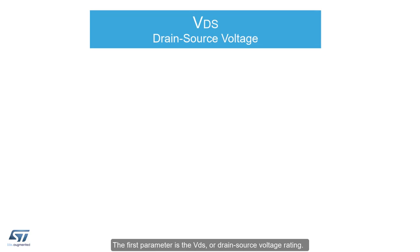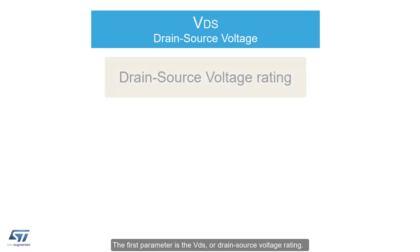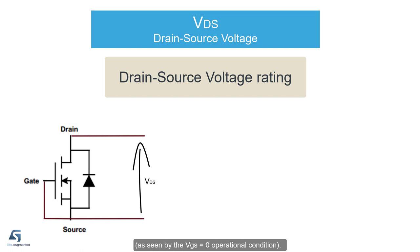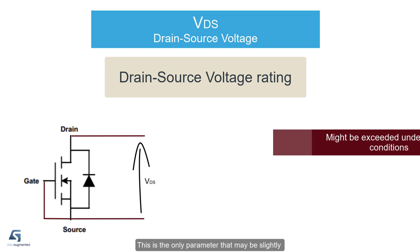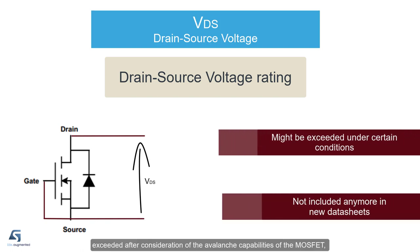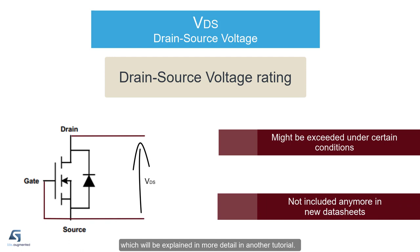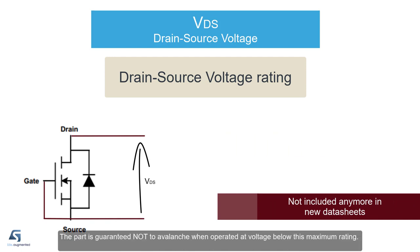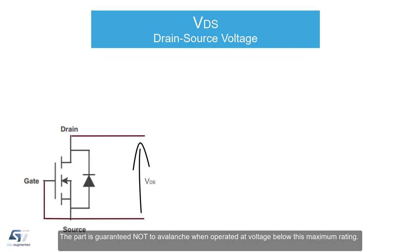The first parameter is the VDS, or Drain-Source Voltage Rating. It specifies the maximum voltage blocking capability of the MOSFET when the device is held off by lack of gate voltage, as seen by the VGS equals zero operational condition. This is the only parameter that may be slightly exceeded after consideration of the avalanche capabilities of the MOSFET, which will be explained in more detail in another tutorial. The part is guaranteed not to avalanche when operated at voltage below this maximum rating.